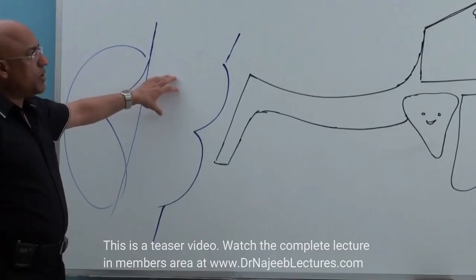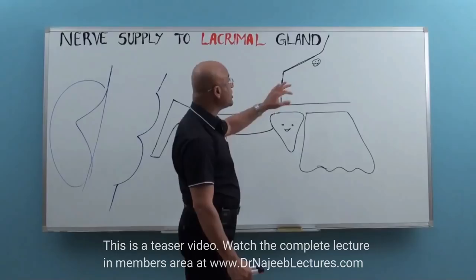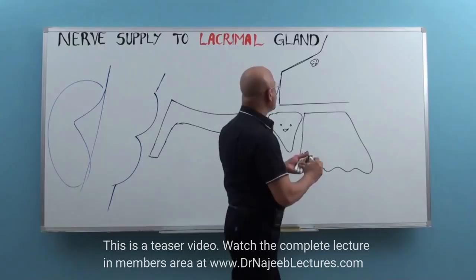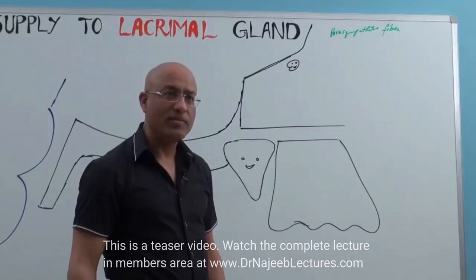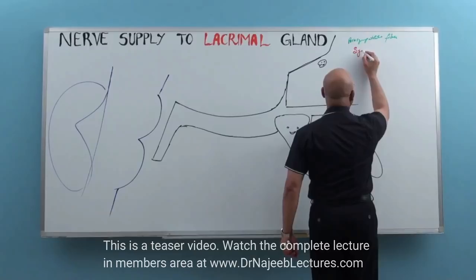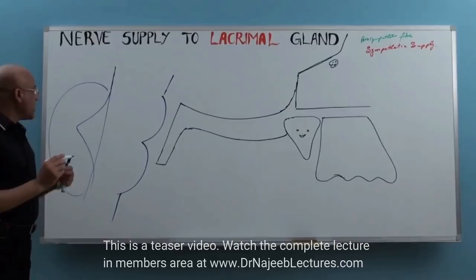When we are talking about nerve supply to a gland, we need to talk about two pathways. Number one: parasympathetic supply — from where the parasympathetic pathways are coming and how they are reaching to this gland. And number two: sympathetic fibers. So we have to bring here parasympathetic fibers, which are basically secretomotor, and then there is sympathetic supply to this gland, which is vasomotor supply to the blood vessels related with this gland.